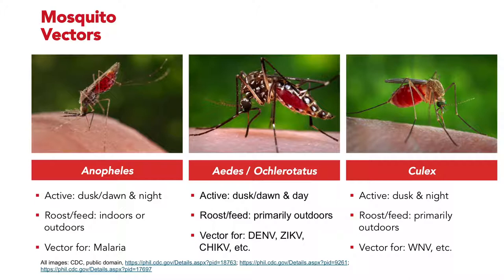The Anopheles mosquitoes are responsible for transmitting malaria, and there are members of this genus all over the world. What makes them particularly dangerous is that they roost indoors and can feed on us while we sleep. One way to identify them is by their feeding posture — the abdomen sticks straight up in the air — and it's always the females that drink blood.